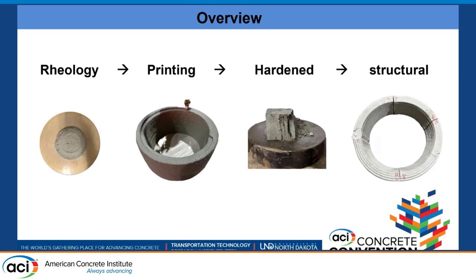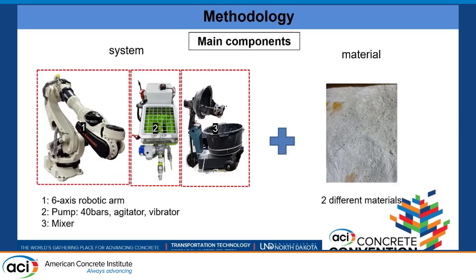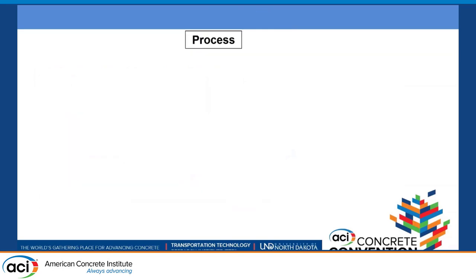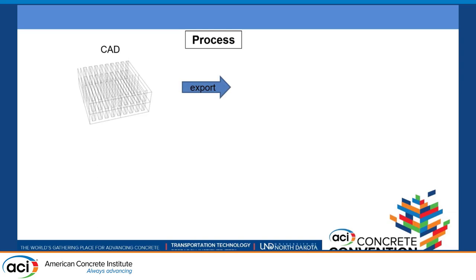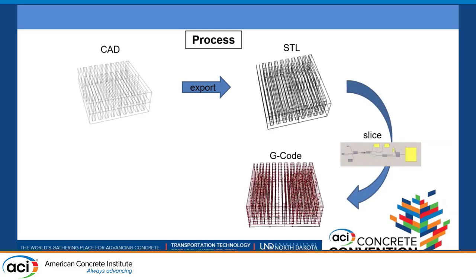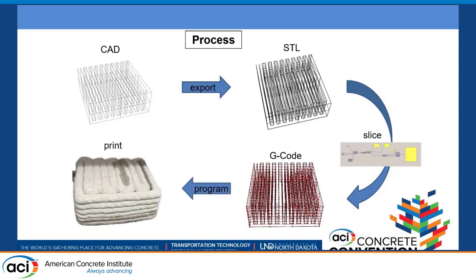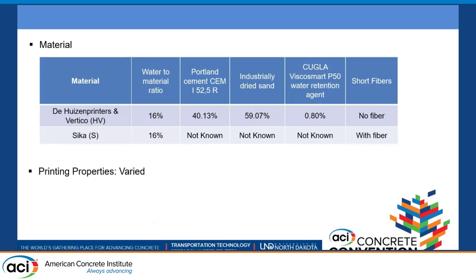We conducted rheology tests to determine how fresh properties affected the printing process and ultimately the hardened and structural performance. We used a large six-axis robotic arm, a pump, and a mixer, along with two different materials. We designed our CAD model, exported it to an STL file, and sliced it to generate G-code to program and print the final structure. The two materials used were Hoisin Printer Vertical, referred to as HV, and Sika, referred to as S. The water-to-material ratio was 0.16 for both materials. One important difference was that HV had no short fibers, while Sika contained short fibers.